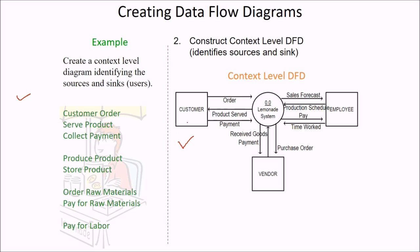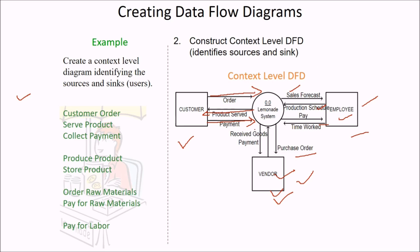The three external entities are: first, the customer who comes for lemonade and consumes it; the vendor who is going to sell it; and the employee working with the vendor. This is lemonade system 0.0. The customer will order from the lemonade system, the product will be served to the customer, and after consuming the product the payment will be done to the lemonade system. The vendor will receive payment and a purchase order. The employee may forecast sales, create a production schedule, receive payment, and record time worked. All these are included in the lemonade system 0.0, which is the context level DFD.